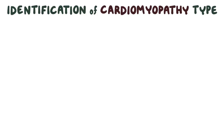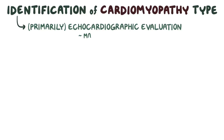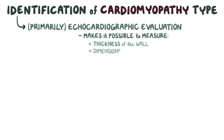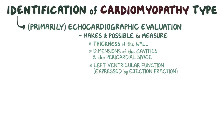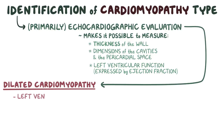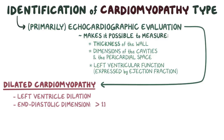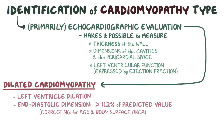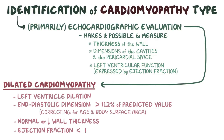Identification of the cardiomyopathy type relies primarily upon echocardiographic evaluation, which makes it possible to measure the thickness of the wall, dimensions of the cavities, and the pericardial space, as well as the left ventricular function expressed by ejection fraction. In dilated cardiomyopathy, the echocardiogram generally shows left ventricle dilation with an end diastolic dimension higher than 112 percent of the predicted value, after correcting for age and body surface area. Additionally, individuals have a normal or decreased wall thickness and ejection fraction below 45 percent.